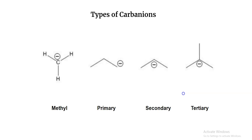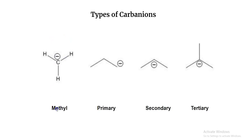Now let's talk about carbanions. As the name suggests, these are anions — they have a negative charge — but the specificity is that the negative charge is centered on the carbon. If you have CH3 with a minus charge, that's a methyl carbanion. If a carbon has a negative charge and is connected to one other carbon, that's a primary carbanion. If a carbon has a negative charge and is connected to two other carbons, that's a secondary carbanion.